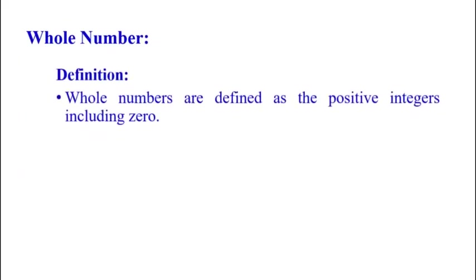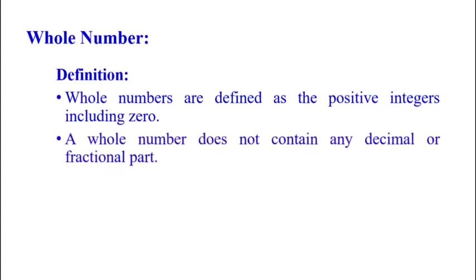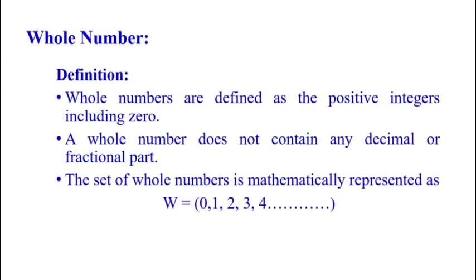Whole numbers. The definition of a whole number: whole numbers are defined as the positive integers including 0. A whole number does not contain any decimal or fractional part. The set of whole numbers is mathematically represented as 0, 1, 2, 3, 4, up to infinity.